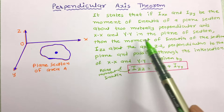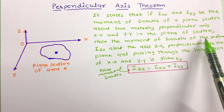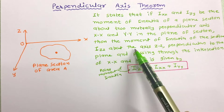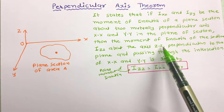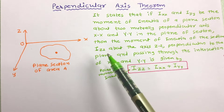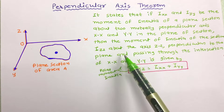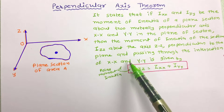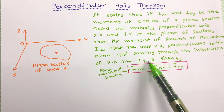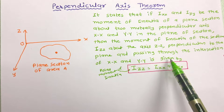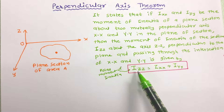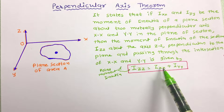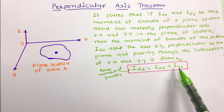then the moment of inertia of the section IZZ about axis ZZ, perpendicular to the plane and passing through the intersection of XX and YY, is given by: IZZ = IXX + IYY.